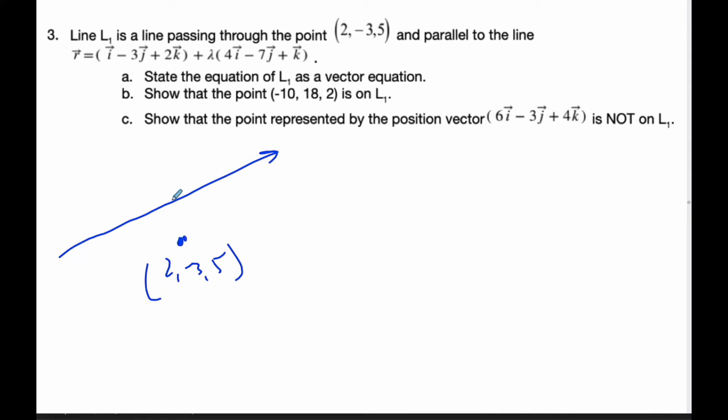If it's going to be parallel, I want it to have the same direction vector. That direction vector is (4, -7, 1). As I change the parameter t, it makes this vector longer or shorter, or opposite direction, and I get every point on the line.